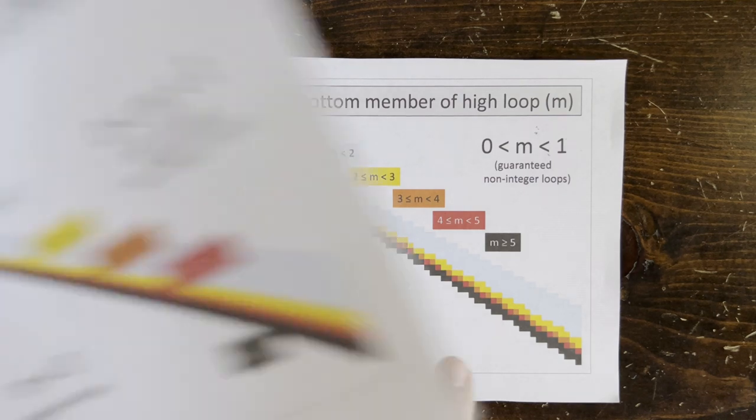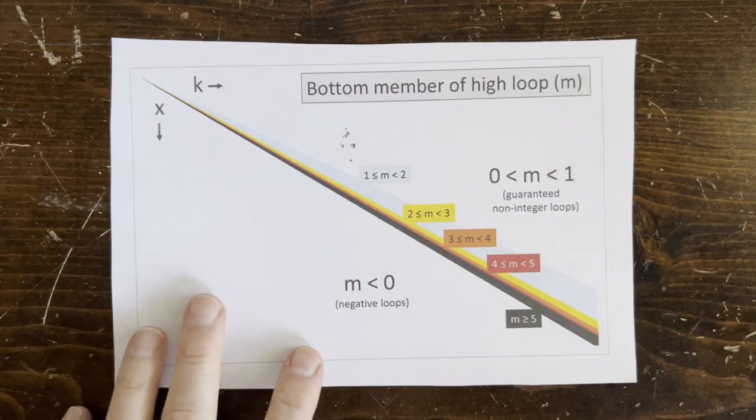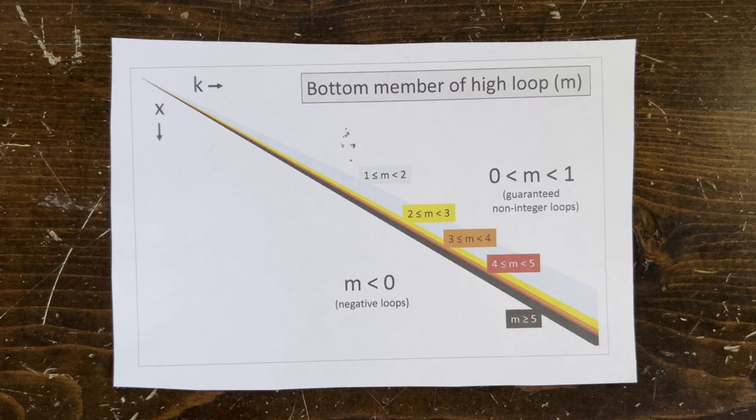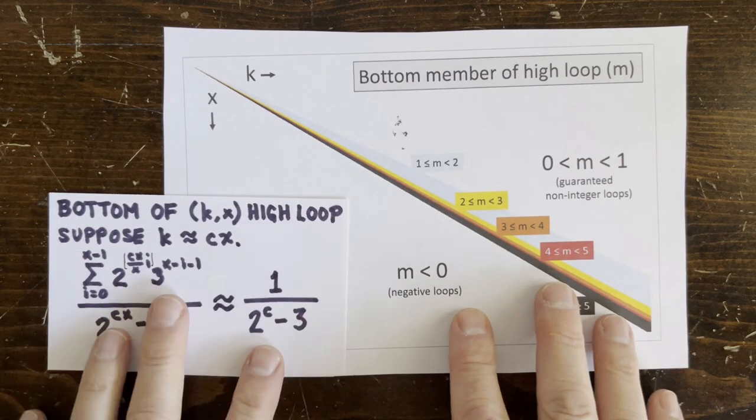And here's what happens if we run the chart out to hundreds of values of x and k. Now, all of these are just empirical observations, but we can also give some theoretical bounds on where these regions are.